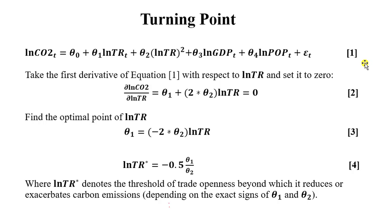On the screen is how to determine the turning points. Equation one is the model that we have specified, and equation two is the first differential. When we take the differential of equation one with respect to trade openness, this is what you get: theta one plus two multiplied by theta two. Remember I said theta one and theta two are the only coefficients that we are interested in. Once you take that first derivative, you set it to zero. From there, everything is easy. All you need to do is to find the optimal points of trade. This is the standard equation for determining the turning points.